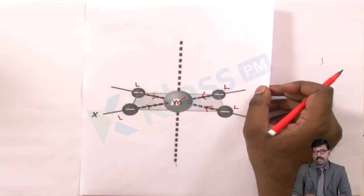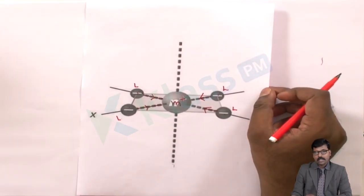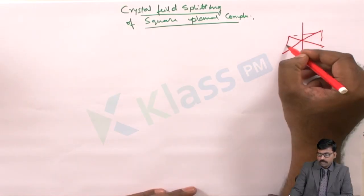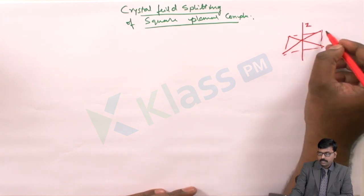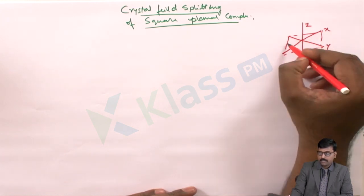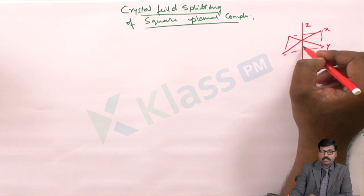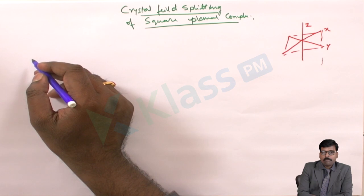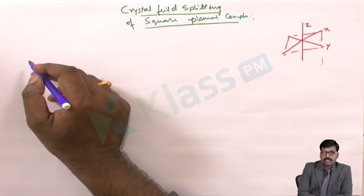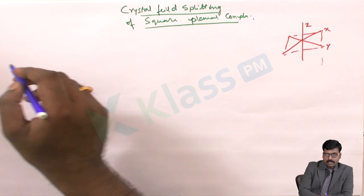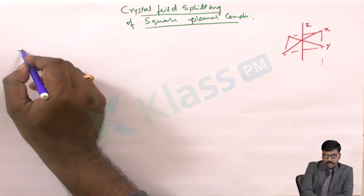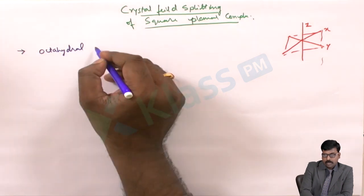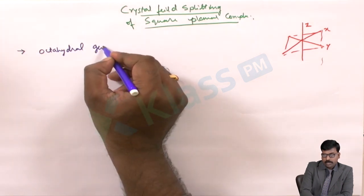Square planar is a planar geometry along the x and y axis — this is the z axis, x axis, y axis. In crystal field theory, the square planar complex is not considered as a separate geometry, but rather it is considered as a modification of octahedral geometry itself.